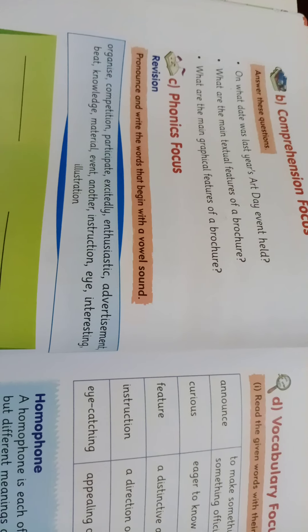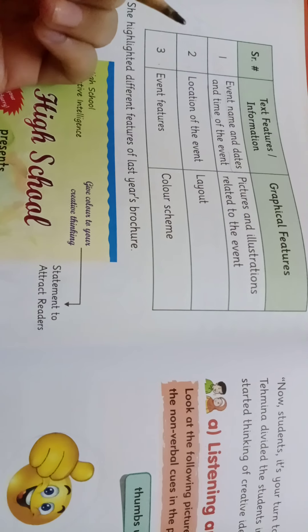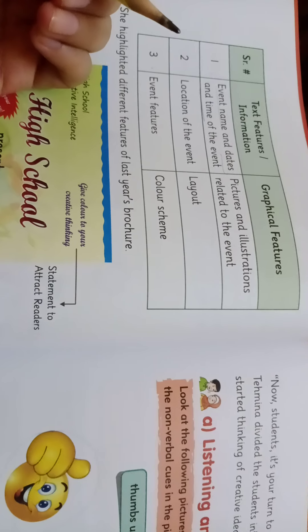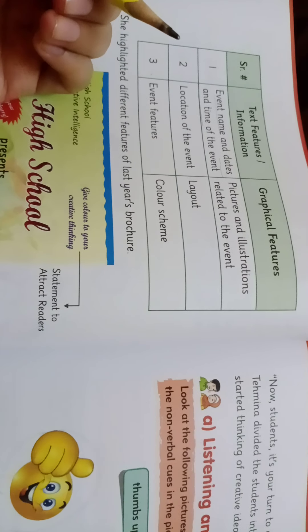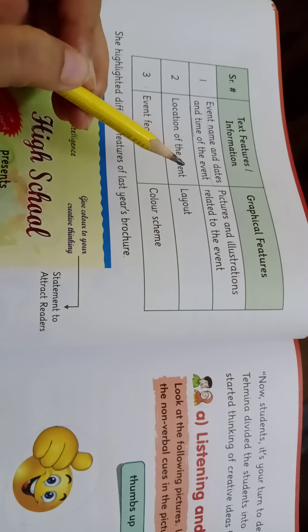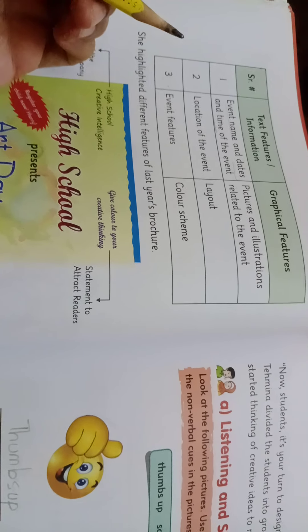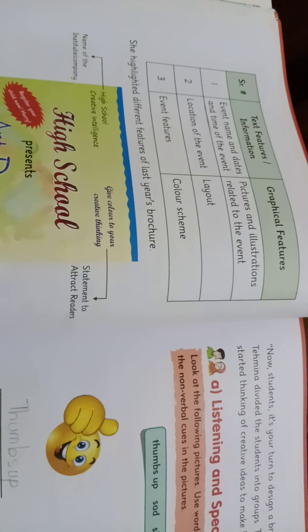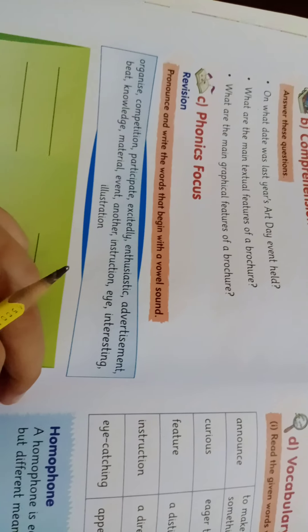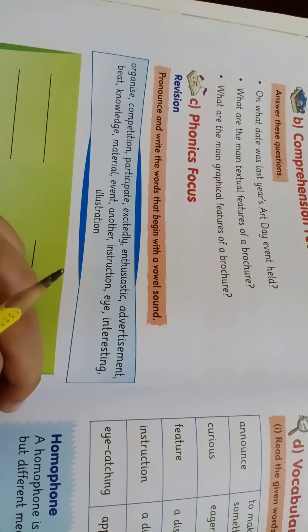The next question is: what are the main graphical features of a brochure? The graphical features include pictures and illustrations related to the event that you can see in your brochures and which look attractive. Also included are an attractive layout, and a color scheme that is eye-catching.